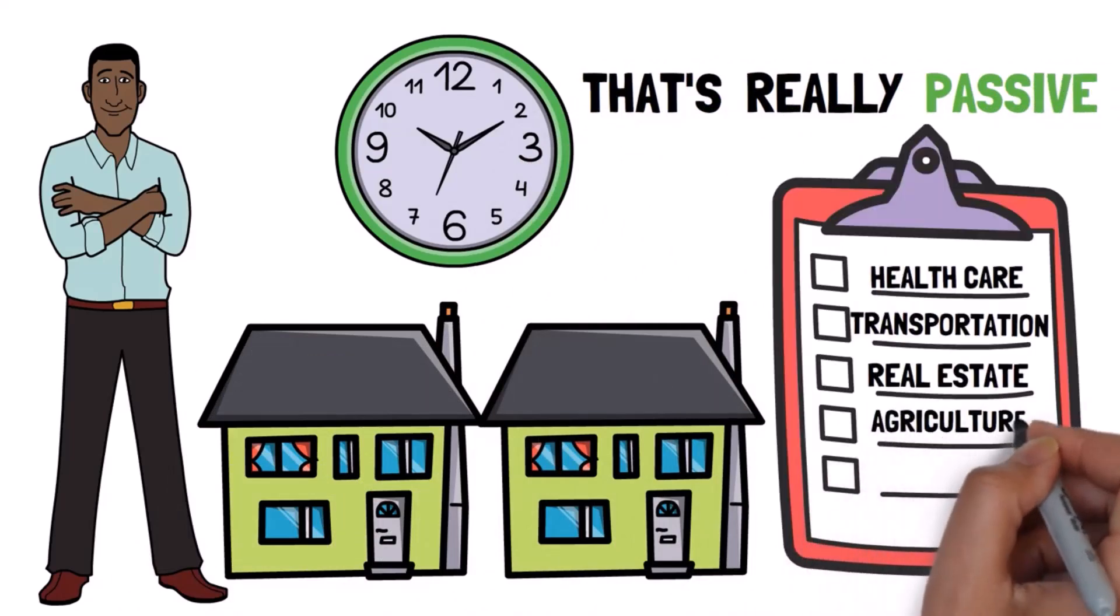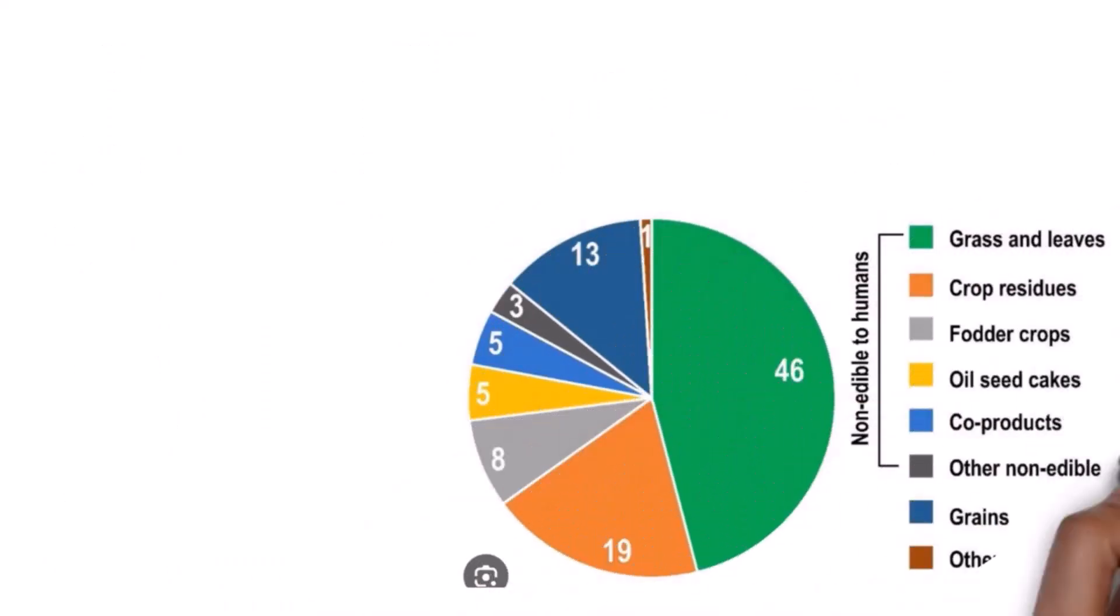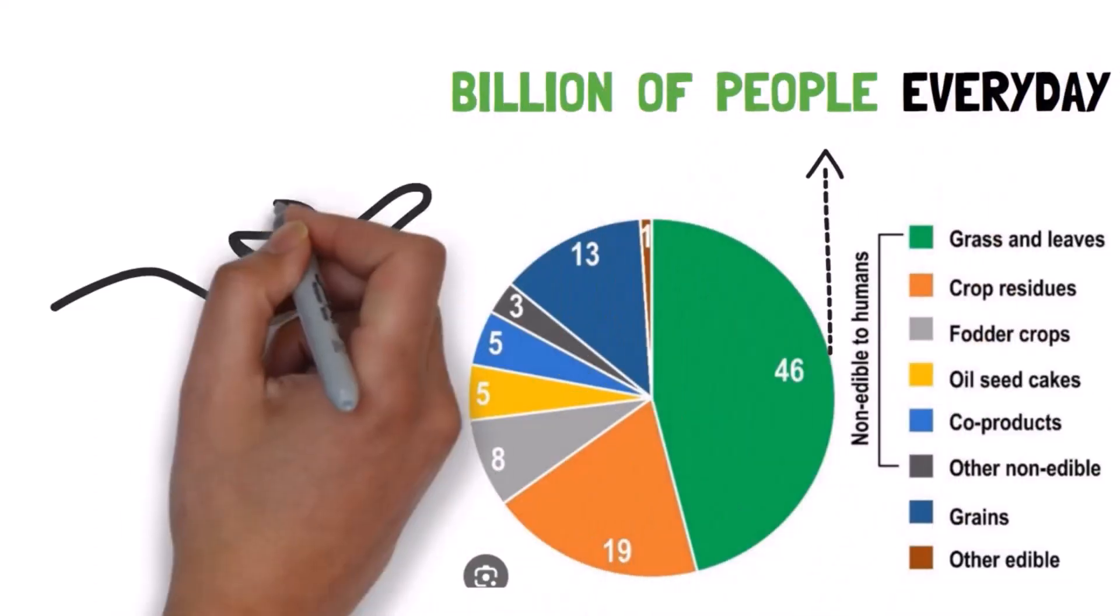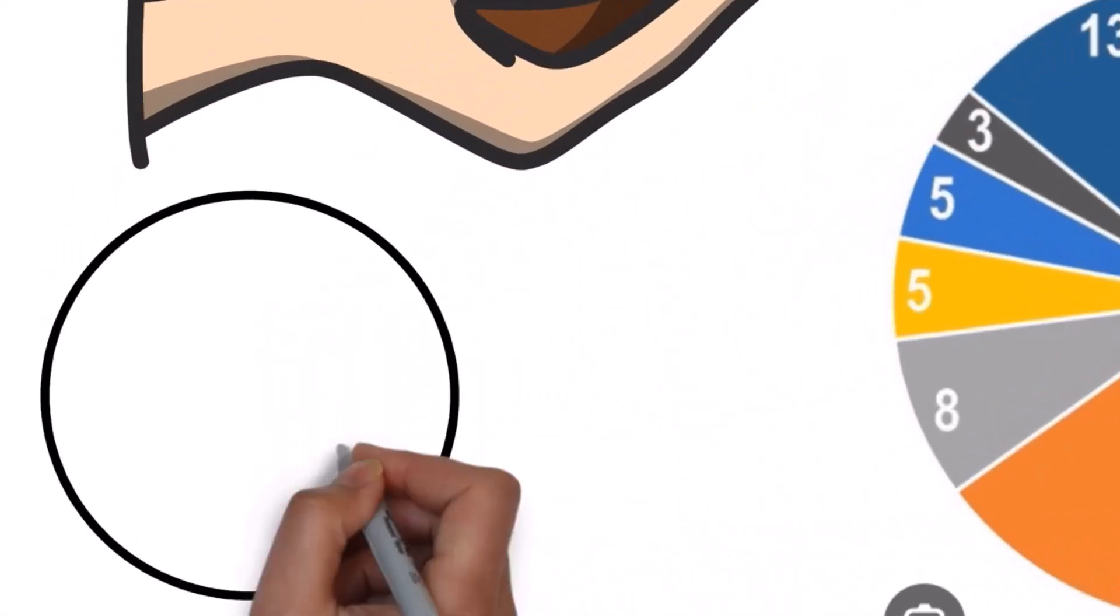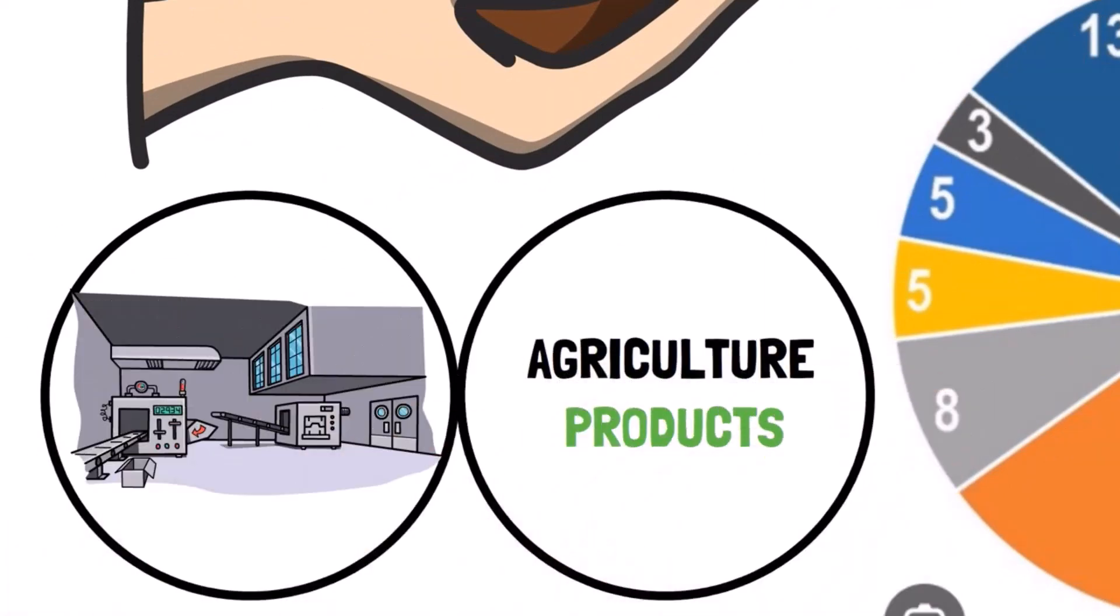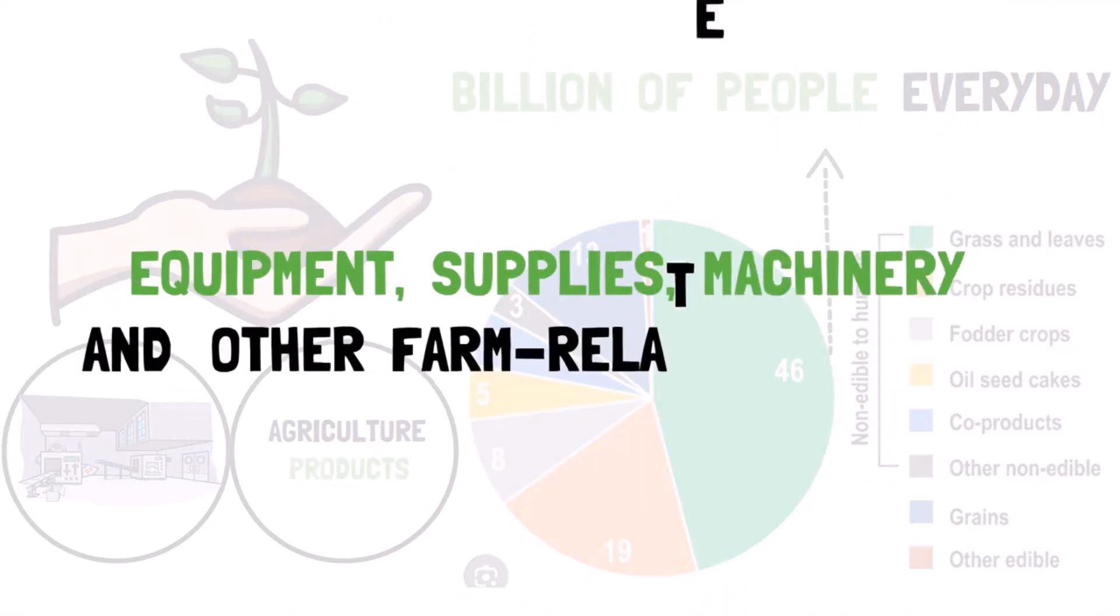The agriculture business. This is the fourth business on our list because agriculture is one of the most important contributions to the global economy since it feeds billions of people every day. Agribusiness or agricultural business refers to the manufacture and sale of agricultural products, so it has farm equipment and supplies, machinery, and other farm-related services.